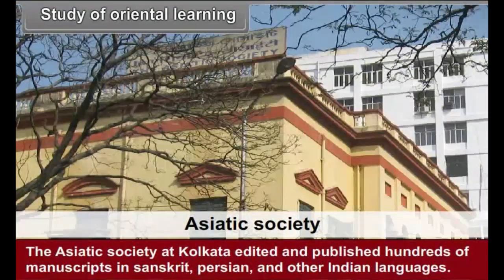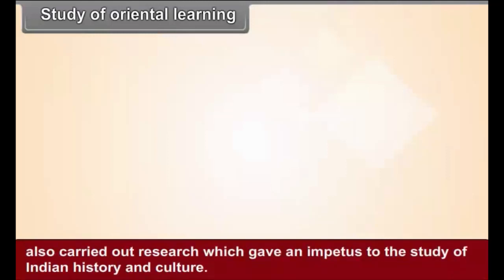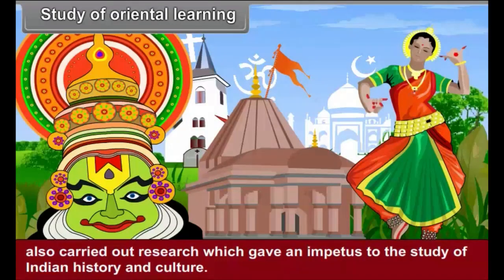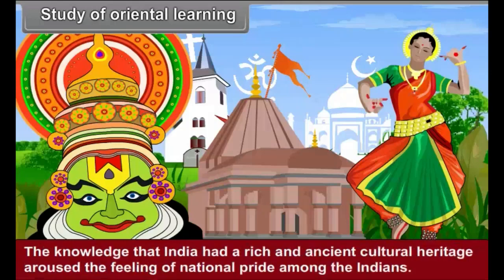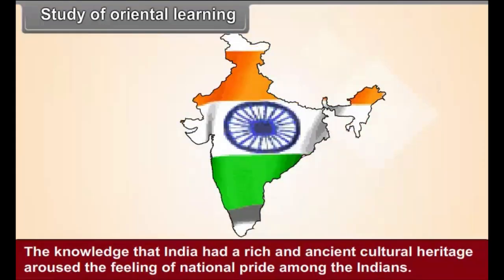In the latter half of the 18th century, some Western scholars had started doing research in the field of ancient Indian history and culture. The Asiatic Society at Kolkata edited and published hundreds of manuscripts in Sanskrit, Persian and other Indian languages. Indian scholars like Dr. Bhau Daji Lad and Dr. R.G. Bhandarkar also carried out research which gave an impetus to the study of Indian history and culture. This made a valuable addition to Oriental studies. The knowledge that India had a rich and ancient cultural heritage aroused the feeling of national pride among the Indians.